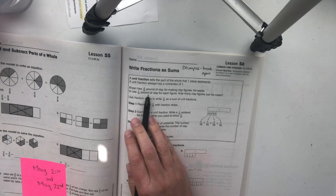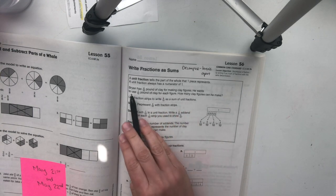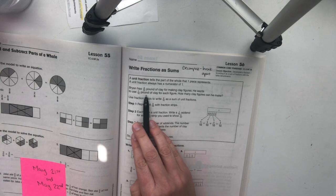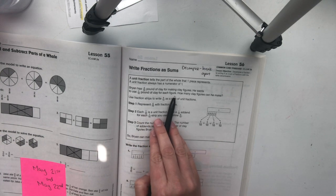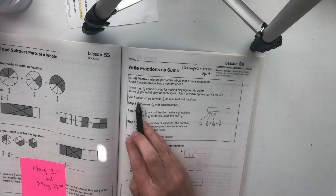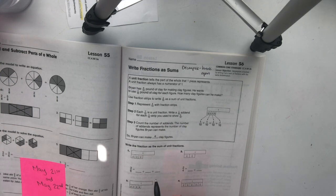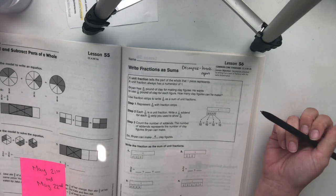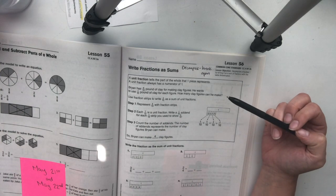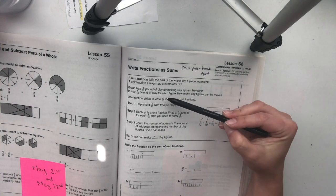Brian has 4 tenths pound of clay for making clay figures. He wants to use 1 tenth pound of clay for each figure. How many clay figures can he make? Use fraction strips to write 4 tenths as a sum of unit fractions. So we need to, what they're asking us to do is take a unit fraction and add them all up to equal 4 tenths.